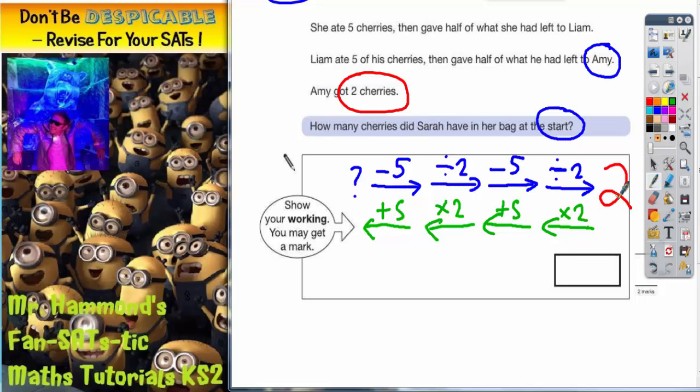So two times two is four. And you can write at the end of the arrows what we're on. So two twos are four. Four add five is nine. Nine times two is eighteen. And eighteen add five is twenty-three. So it looks as though Sarah started with twenty-three cherries. So that's the answer I need to write in my answer box.